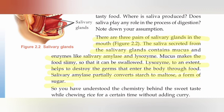Salivary amylase partially converts starch to maltose. Maltose is a form of sugar. So salivary amylase converts starch into maltose.